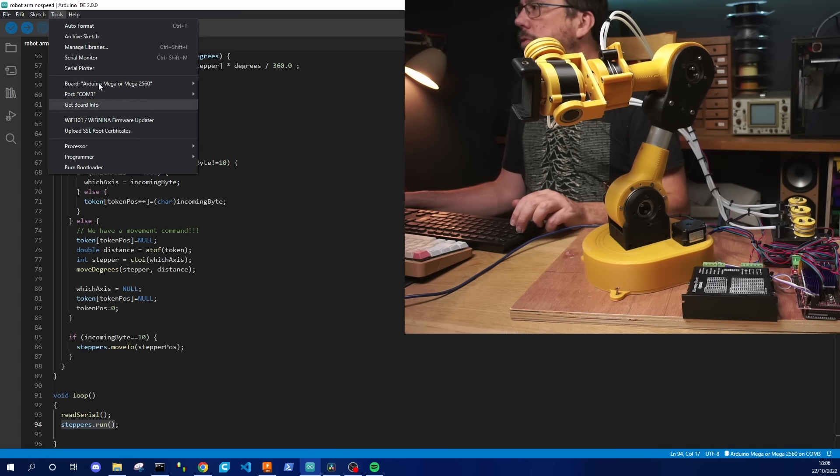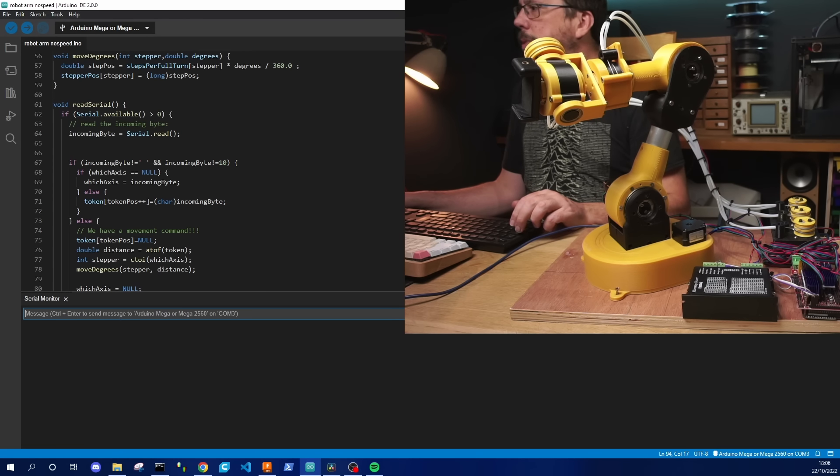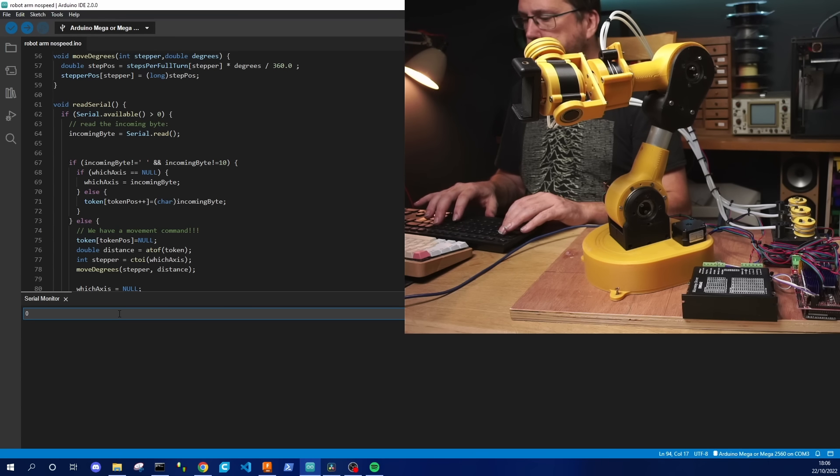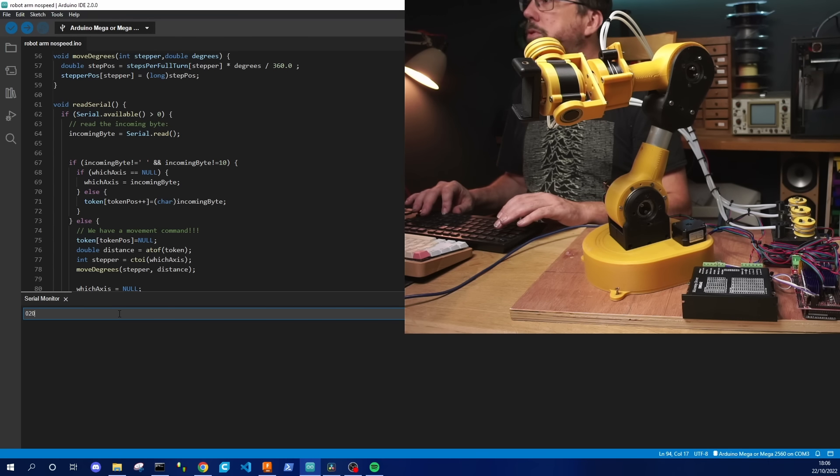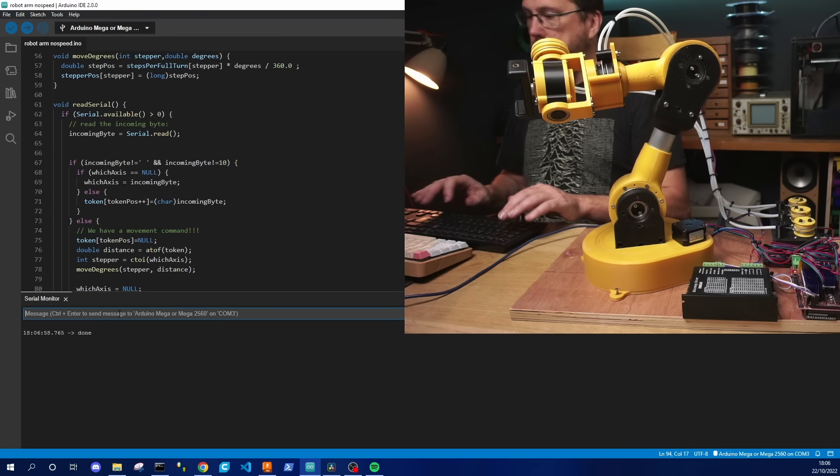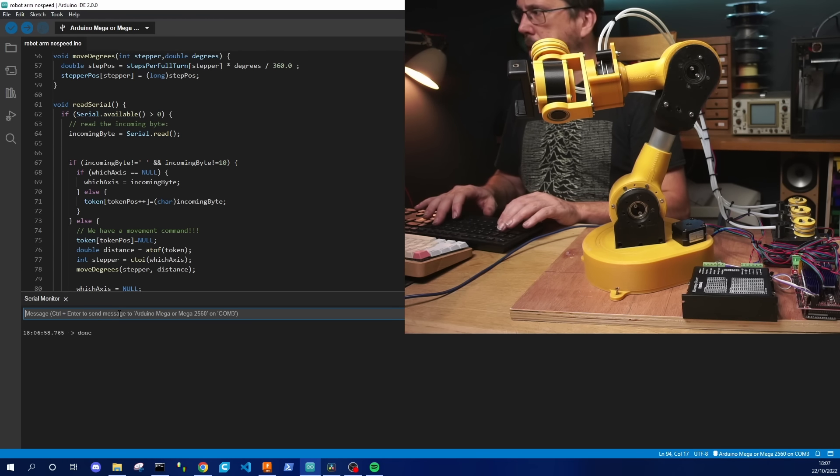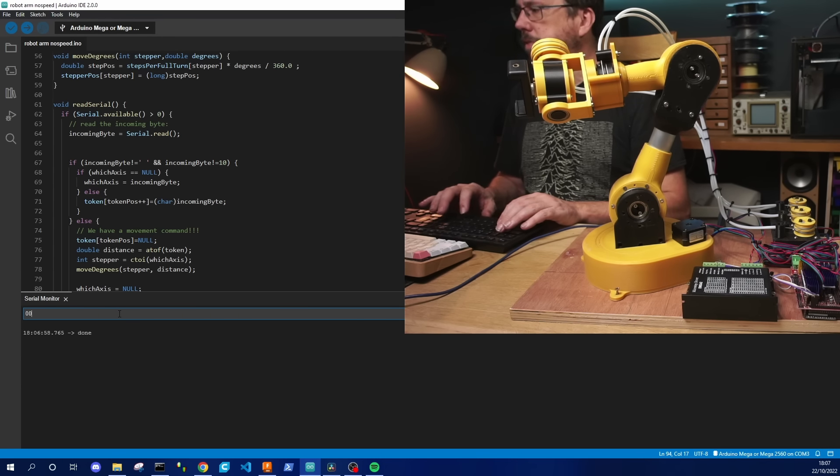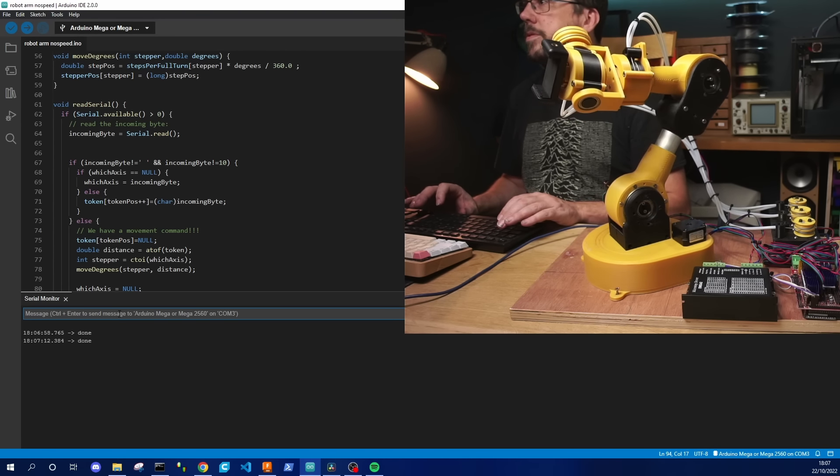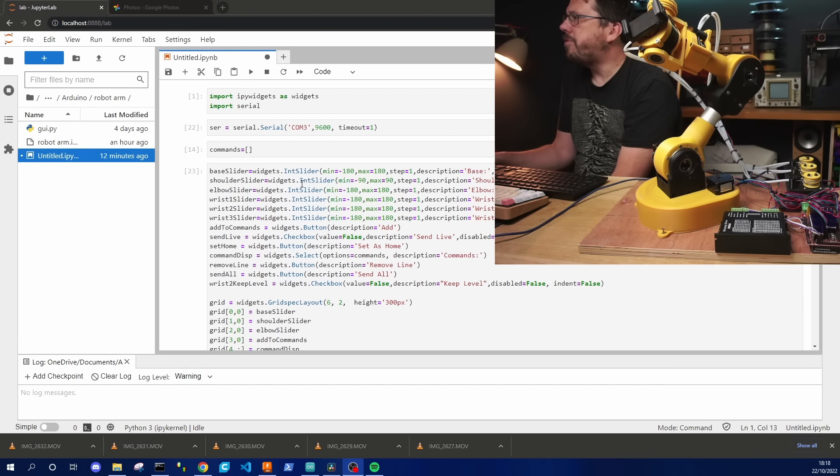So now if we load up the serial monitor we should be able to send commands to our arm. If we start off with zero which is the base stepper driver and then 20, we should be able to move the base by 20 degrees. There we are. We should be able to also send multiple commands, so if we set zero back to zero degrees and then the shoulder moving to 10 degrees.